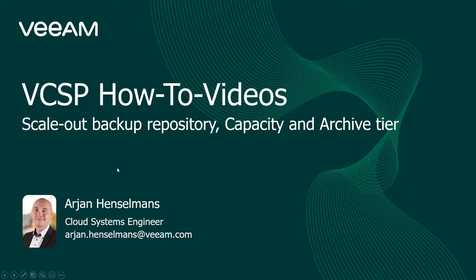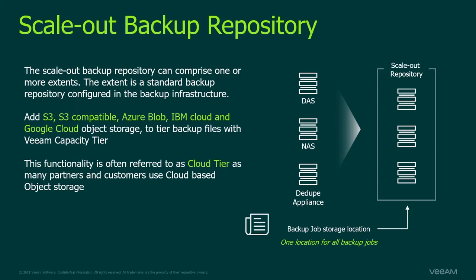Our scale-out backup repository is a backup repository that can comprise one or more extents. An extent is a standard backup repository configured in your backup infrastructure. You can add direct attached storage based on Windows or Linux, a network attached storage repository based on CIFS and NFS, or a DDub device as an extent. You can add as many as you want, giving you one location for all backup jobs.